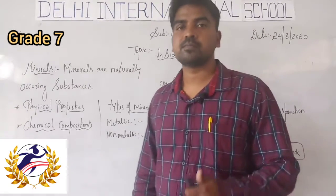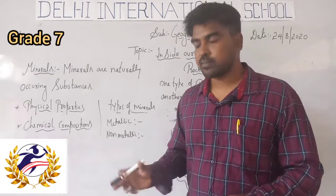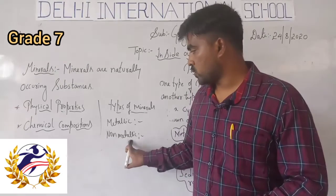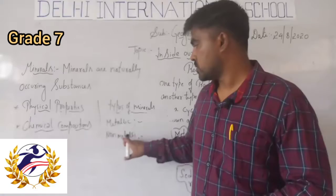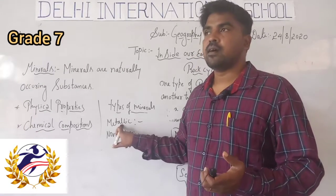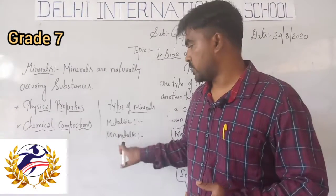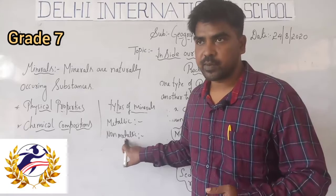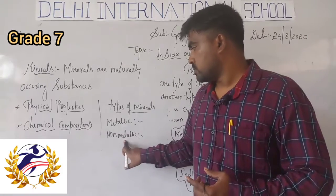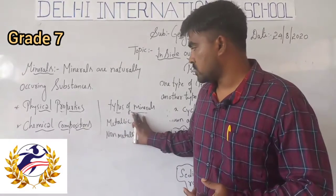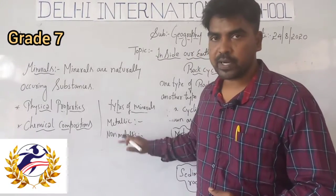Non-metallic minerals include gold, plastic, coal, and petroleum. Iron catches rust because it has metal content, whereas gold does not catch rust because it does not contain ferrous metal. Like this, minerals are categorized into metallic minerals and non-metallic minerals.